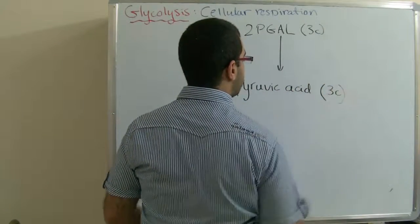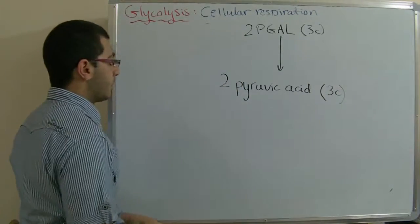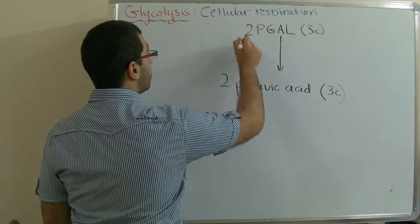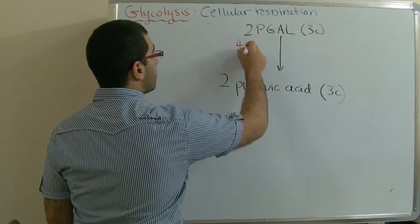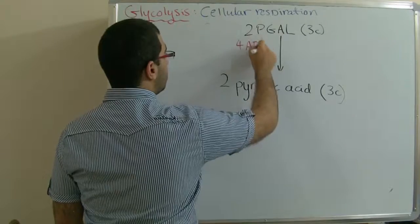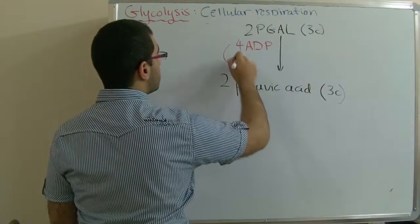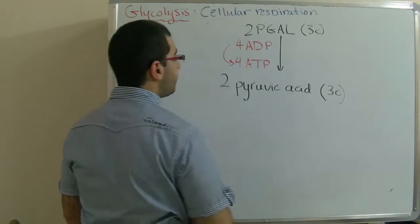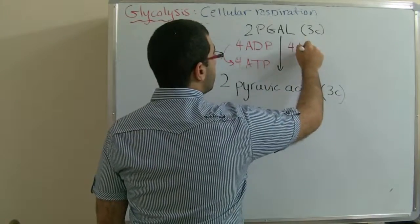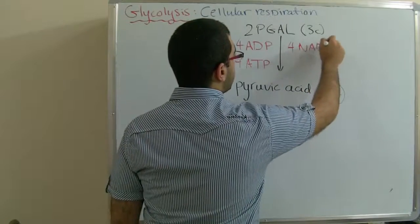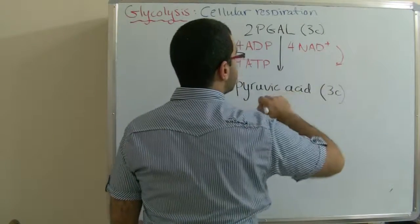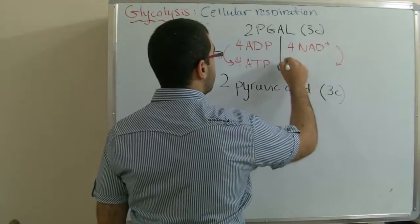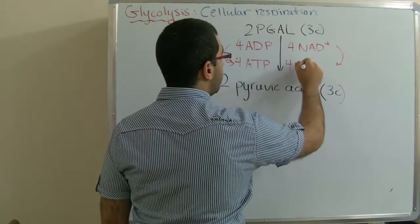In this transformation we have four ADP molecules phosphorylated into four ATP, and we have four NAD+ that carried four hydrogen atoms and transformed into four NADH.